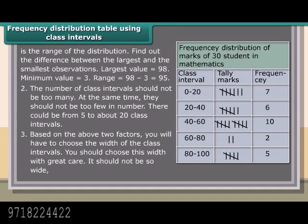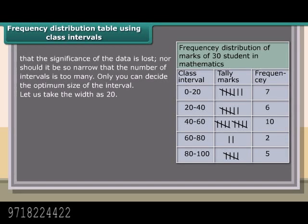3. Based on the above two factors, you will have to choose the width of the class intervals. You should choose this width with great care. It should not be so wide that the significance of the data is lost, nor should it be so narrow that the number of intervals is too many. Only you can decide the optimum size of the interval. Let us take the width as 20.